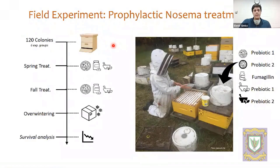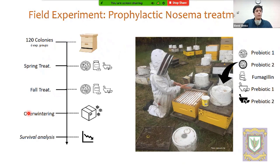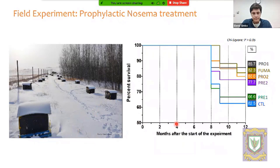We were interested in testing prophylactic treatment and checking how it interferes with nosema infection and the overwinter survival of those colonies. We tested 120 colonies divided into six different groups, treated two times a year — one treatment during spring and another during fall — then prepared the bees for overwintering, which is quite a significant step here in Canada. After overwintering we checked the survival rates.